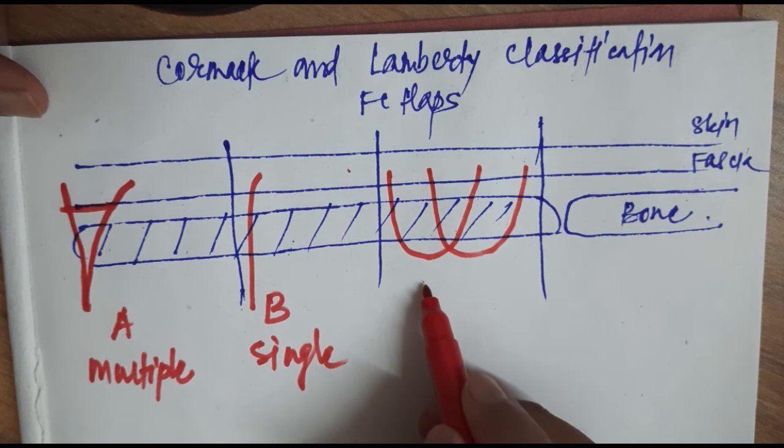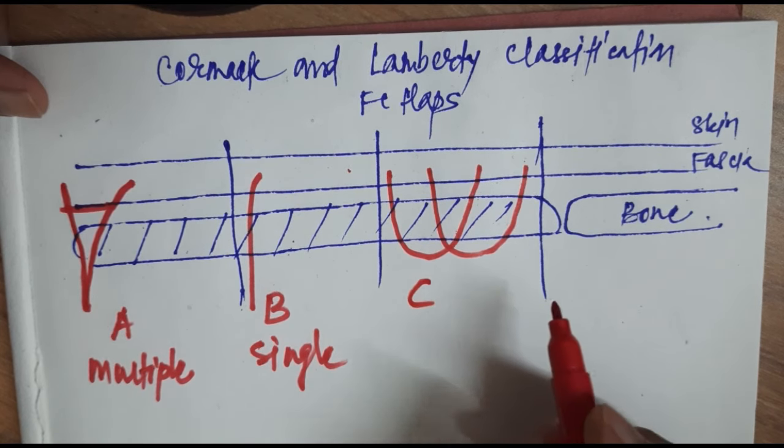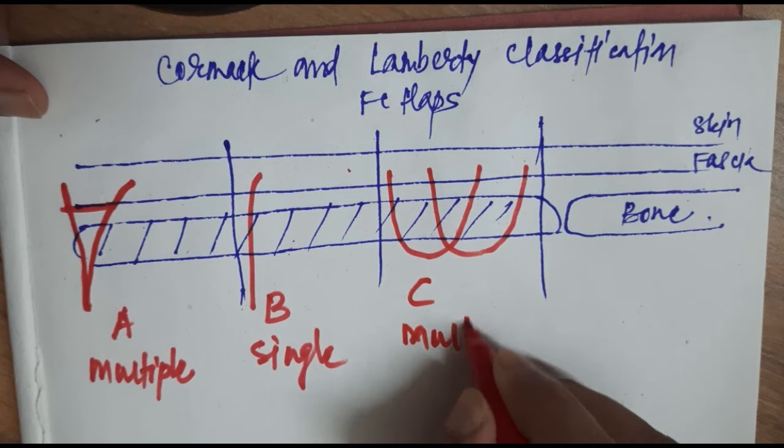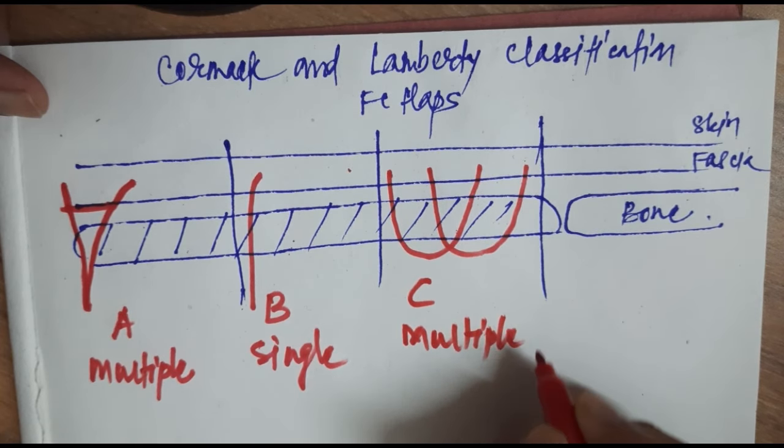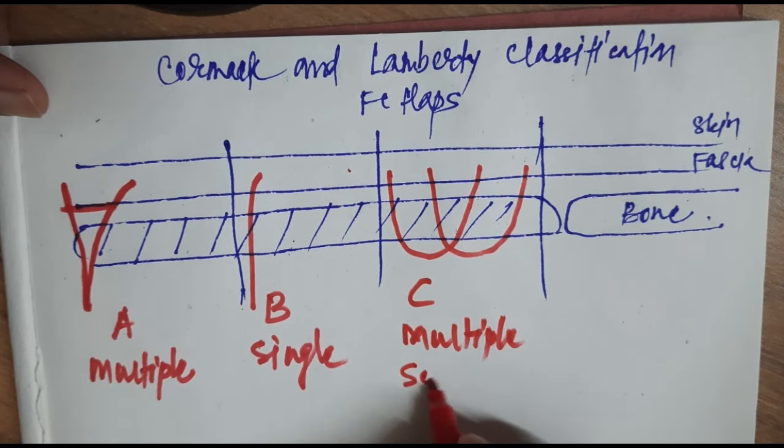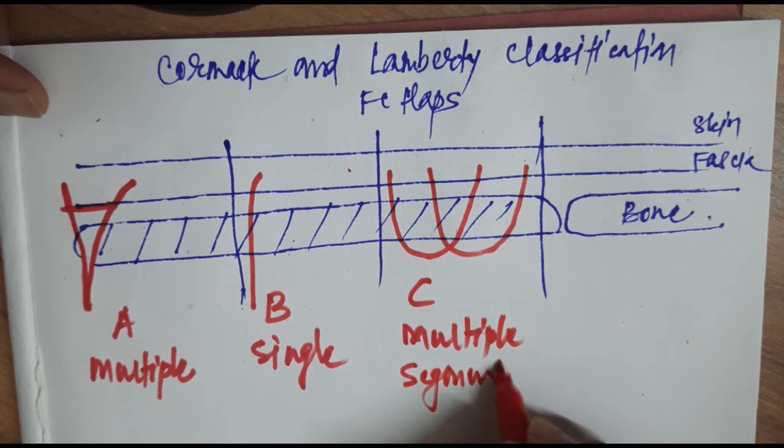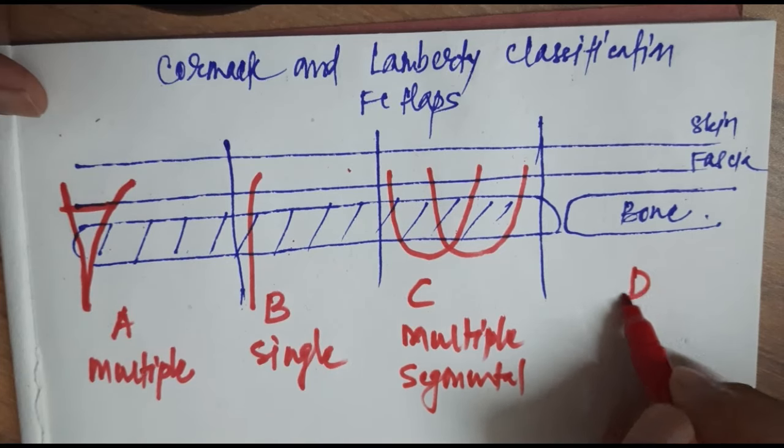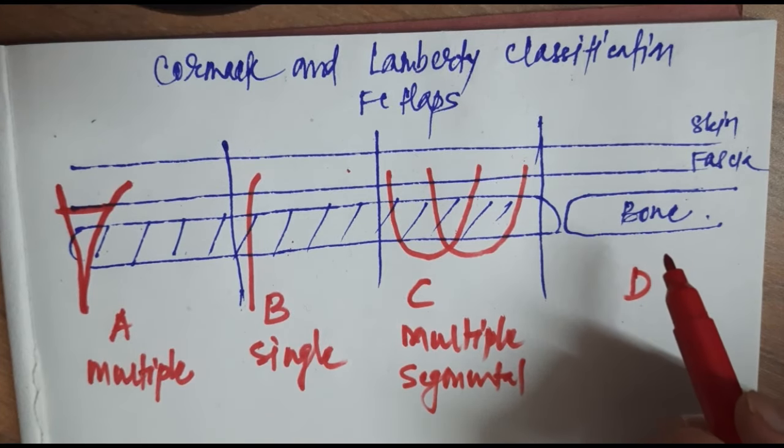Type C, if we see it from this way, is like a C. Type C has multiple segmental and small vessels.